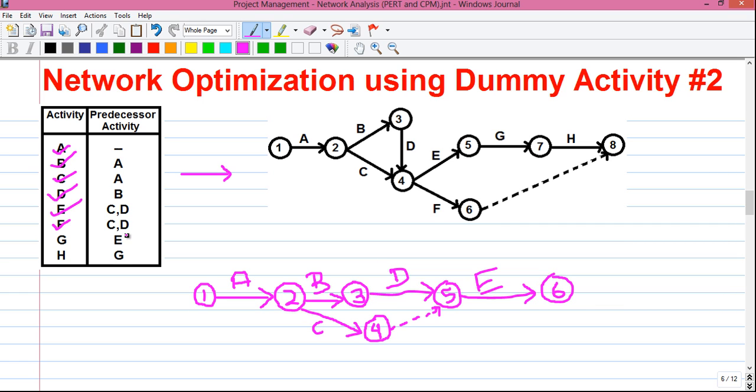Next activity is F which has same predecessor activities, that is C and D. So it will also start from event five and it will end at event seven. Next is G which has the predecessor activity of E. So it will start from event six and will end at eight. And our final activity is activity H which will start from event eight and will end at event nine.